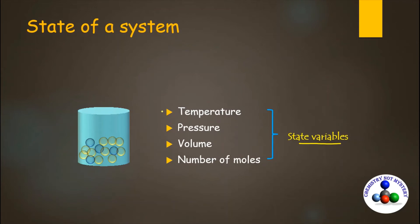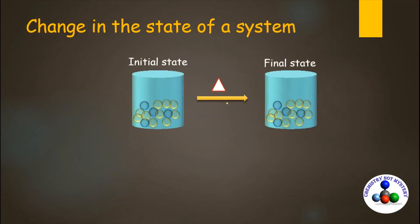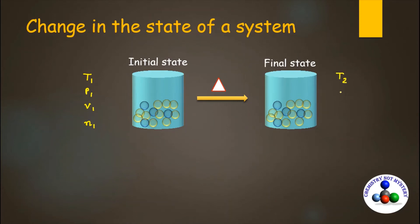For any system, a particular set of state variables defines the current state. This is the initial state of the system, defined by temperature T1, pressure P1, volume V1, and number of moles N1. When you heat this system, it reaches the final state, defined by temperature T2, pressure P2, volume V2, and number of moles N2.